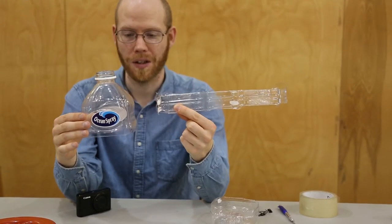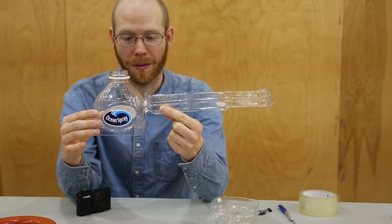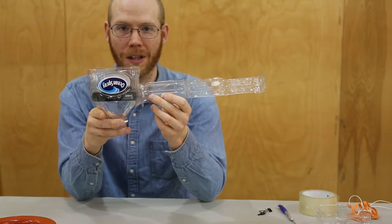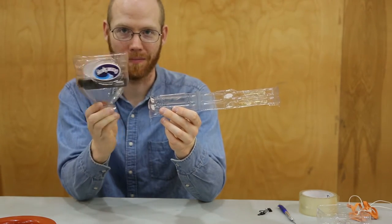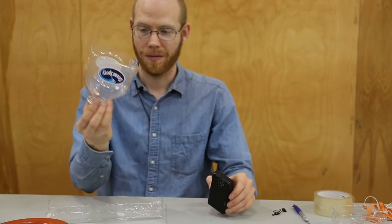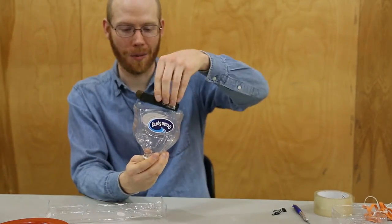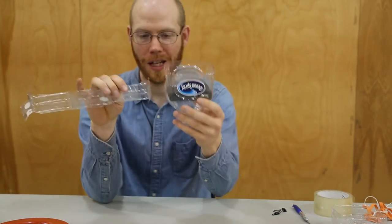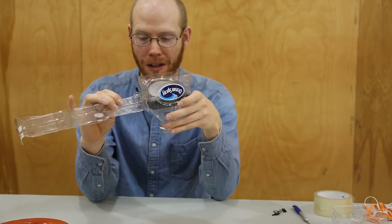The stabilizer fin tapes to the back of the bottle right behind the camera. The fins go directly behind the camera to pull the camera straight in the wind so it doesn't just spin. To determine where to put the stabilizer fin, I'll put the camera in the bottle and tape the fin directly behind it so that the rig doesn't spin.